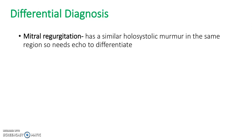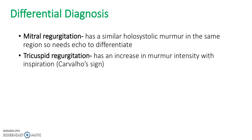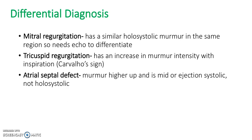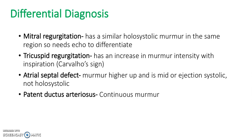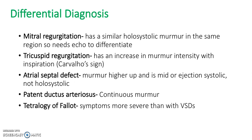Differential diagnoses for VSD include: mitral regurgitation, which has a similar holosystolic murmur in the same region — an echocardiogram is needed to differentiate. Tricuspid regurgitation has increased murmur intensity with inspiration — Carvallo's sign. An ASD murmur will be slightly higher up and is mid or ejection systolic, not holosystolic. Patent ductus arteriosus produces a continuous murmur, not holosystolic. Tetralogy of Fallot presents with more severe symptoms than a VSD.